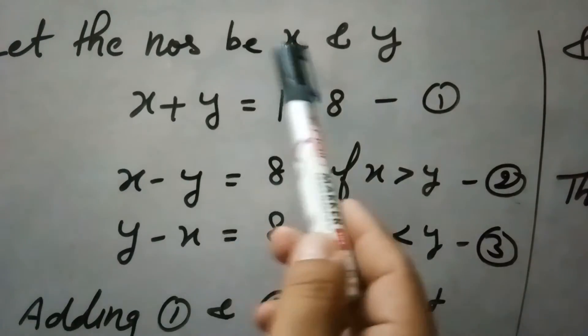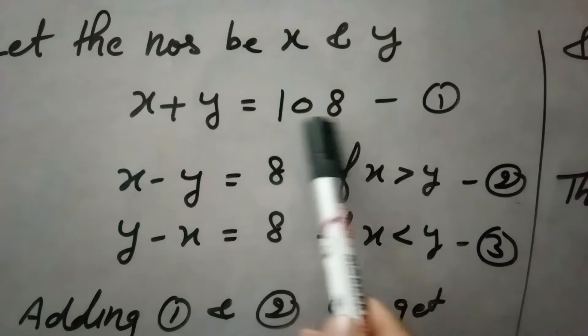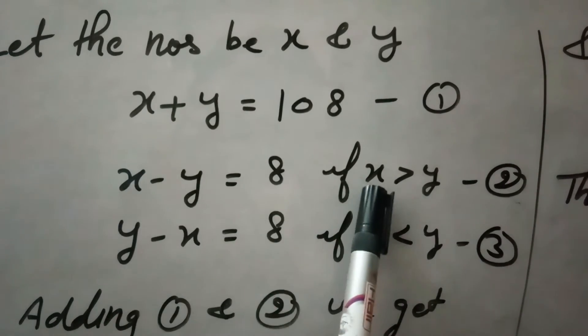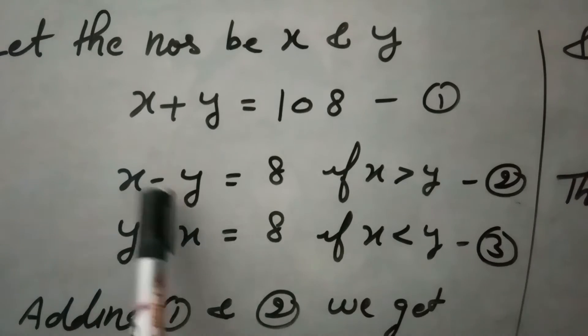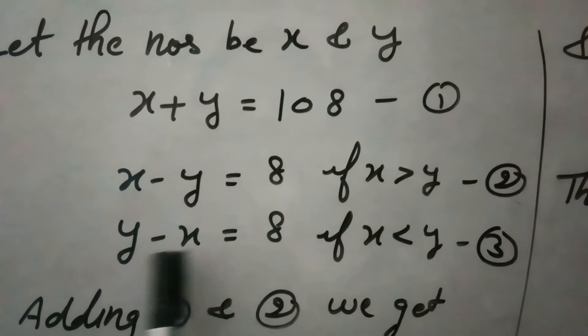Let these two numbers are x and y. According to the question, x plus y equals 108 and difference of the numbers is 8. If x is greater than y, then difference is x minus y, and if x is less than y, then difference is y minus x.